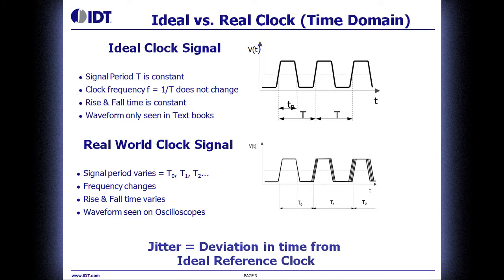The easiest place to understand jitter is the time domain, and we'll look at an ideal clock signal versus a real-world clock signal. The picture on the top is an ideal clock. The signal period T is constant. The clock frequency, which is the reciprocal of time, is also constant. The rise and fall time is constant and does not change. Obviously this waveform is only seen in textbooks.